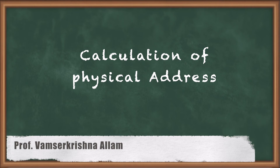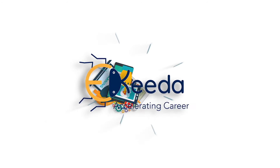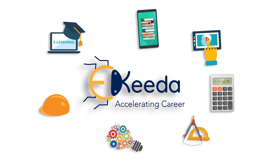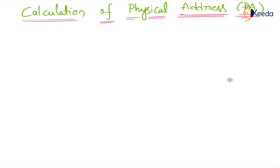Hi students, today we will discuss the calculation of physical address. In the last class, I clearly explained the bus interface unit. What is the main function of the bus interface unit? The main function of the bus interface unit is fetching the instruction from memory. This class we will go over how we can calculate the physical address.